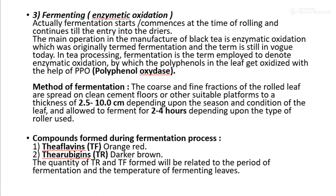Compounds formed during the fermentation process include theaflavins, which are orange-red, and thearubigins, which are dark brown. The quantity of theaflavins and thearubigins formed will be related to the period of fermentation and the temperature of the fermenting leaves.